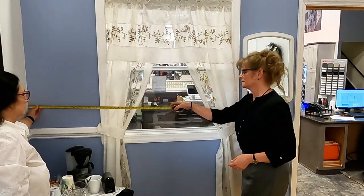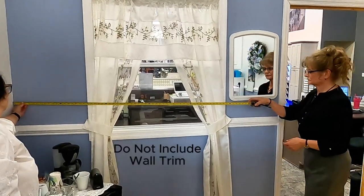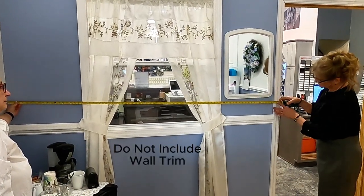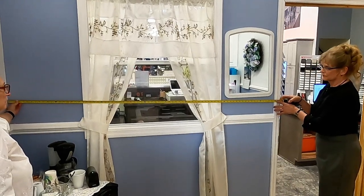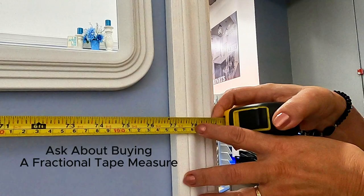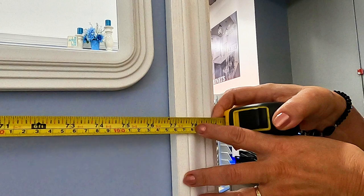We want to make sure that we do not include the trim in our wall measurements. Then you do the whole wall. This is just to verify that we got everything correct. Make sure you do not include the trim in any of your measurements so that we don't put any cabinets over top of your trim. That would not be good.